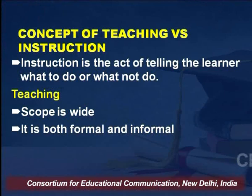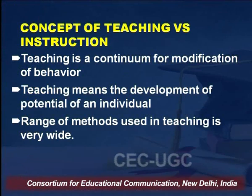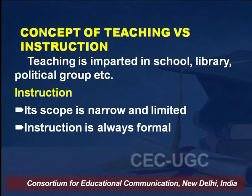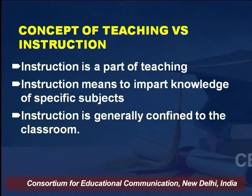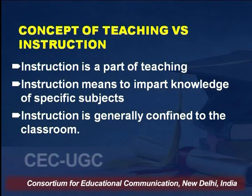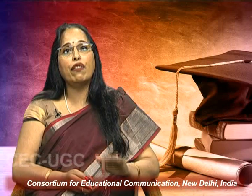Now let us try to understand the difference between teaching and instruction. In teaching, the scope is very wide and it is formal as well as informal. It is a continuum and modification of behavior. It is development of the potential of an individual. It utilizes a range of methods. As far as instruction is concerned, its scope is narrow and limited. It is usually formal and it is part of teaching. For example, when students go to the lab, they are being instructed — instructed how to use chemicals in the lab to produce certain results. Instruction means to impart knowledge of a specific subject and is generally confined to the classroom.